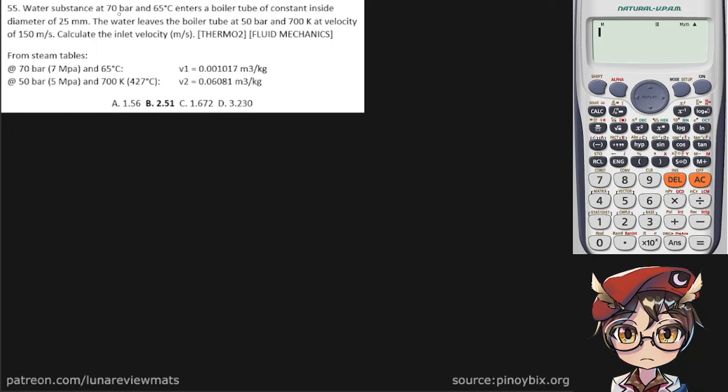Water substance at 70 bar and 65 degrees C enters a boiler tube of constant inside diameter of 25 millimeters, or 0.025 meters. The water leaves the boiler tube.